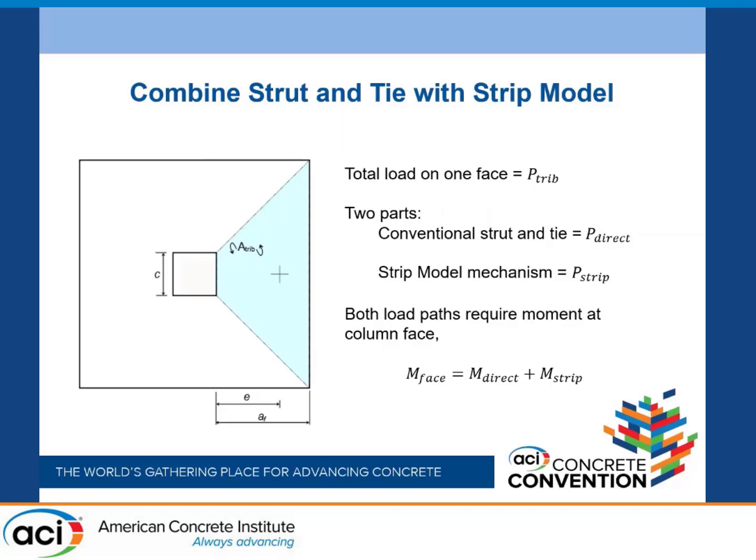Both mechanisms are going to share the load. We've got a conventional strut-and-tie — I'm just going to call that P-direct — and a strip model mechanism, P-strip. What really matters is both of them need moment at the column face. They both make demands on the moment at that face. The compression block has to go in there, and the tension can be spread out quite a bit wider. Whether it's a strip model strut or a conventional strut-and-tie, it's the vertical component of that compression that's carrying the load.